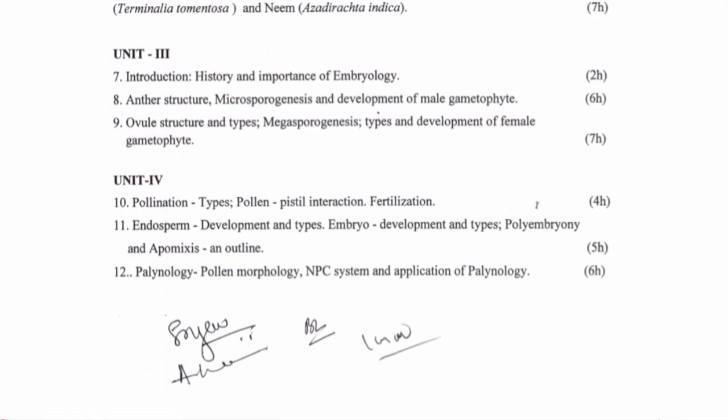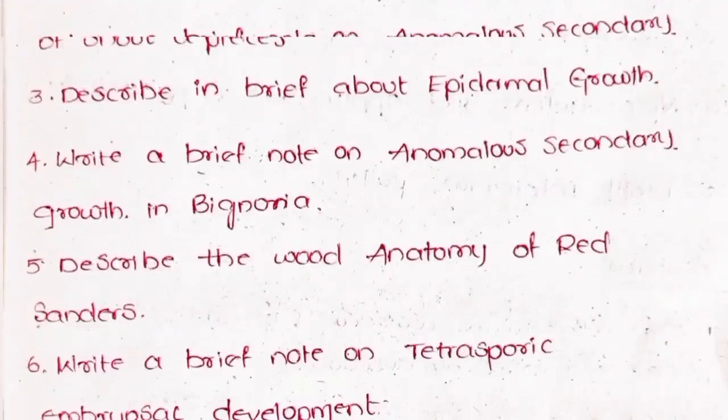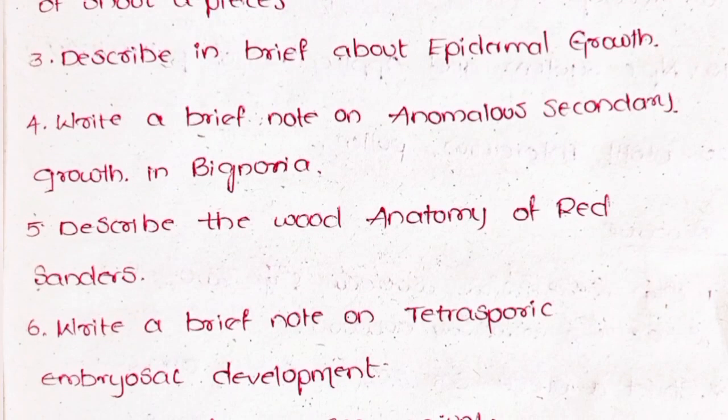1. Write a detailed note on leaf histogenesis and leaf meristem. 2. Write an account on histological organization of shoot apices. 3. Describe a brief note about epidermal growth. 4. Write a brief note on anomalous secondary growth in Bougainvillea. 5. Describe the wood anatomy of red sanders.